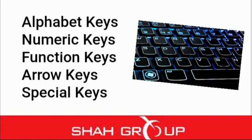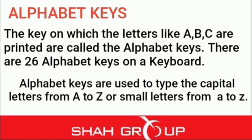There are many types of keys which we have divided. The keys on which letters like A, B, C are printed are called alphabetic keys. There are 26 alphabetic keys on a keyboard. Alphabetic keys are used to type capital letters from A to Z or small letters from A to Z.